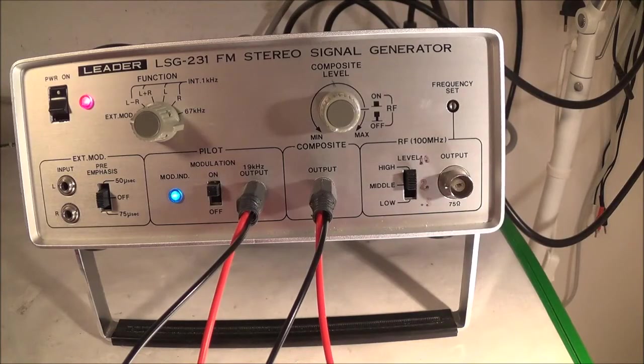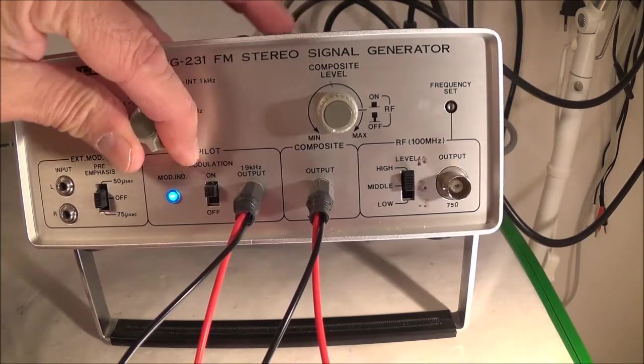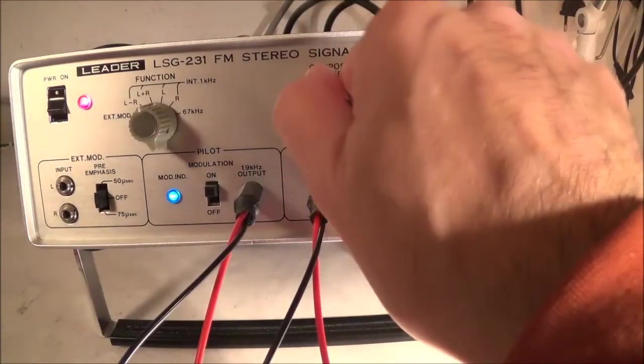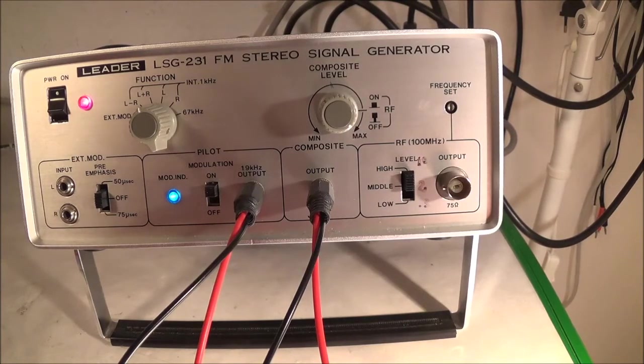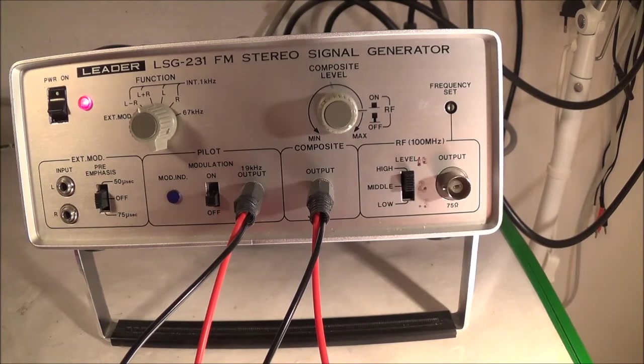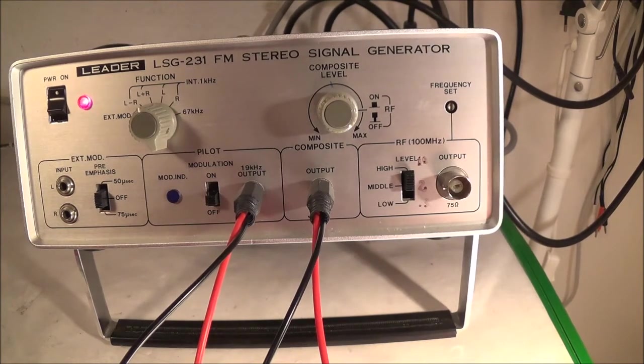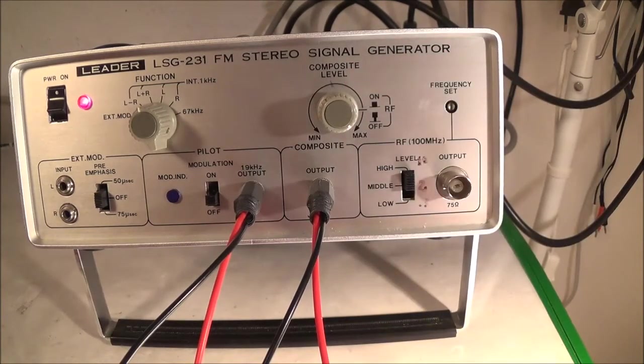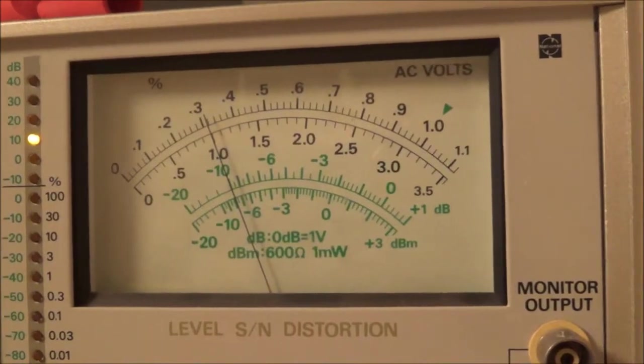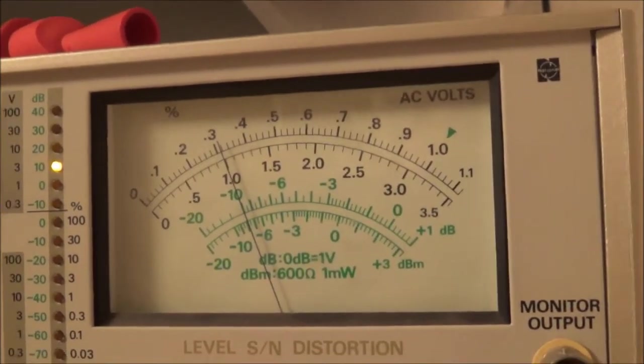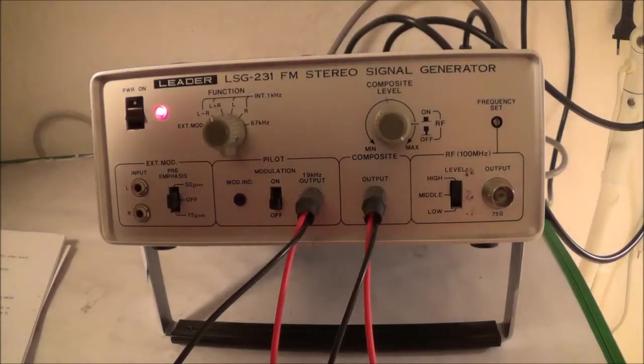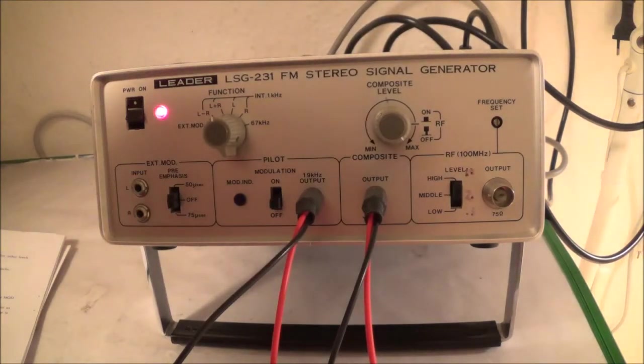So now comes the composite output check and adjustment. Function switch to L plus R. Composite level to max. Control knob to RF off. Pulled out it is off. Pilot and modulation switch to off. And we hook up the AC millivolt meter to the composite output jack. And the output should be 1 volt RMS at maximum. So hook up the meter. So we can take a look at the meter. And it is 1 volt. So we are pretty close. I don't think I am going to adjust it. Now if that voltage was incorrect, you would adjust VR407 on the printed circuit board.